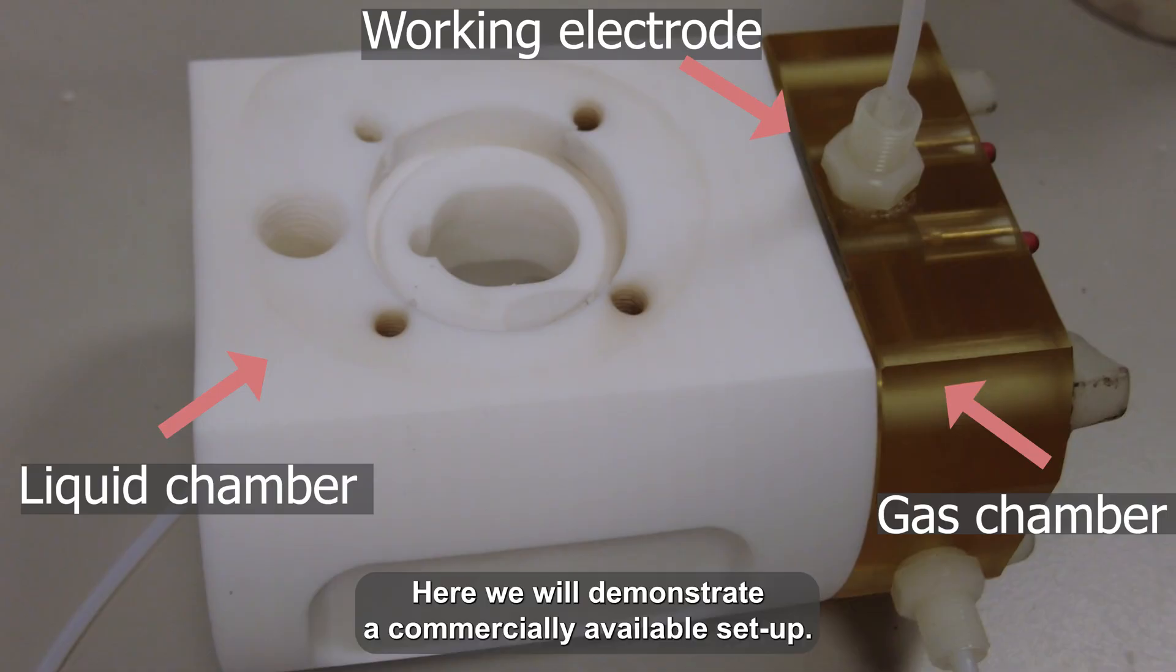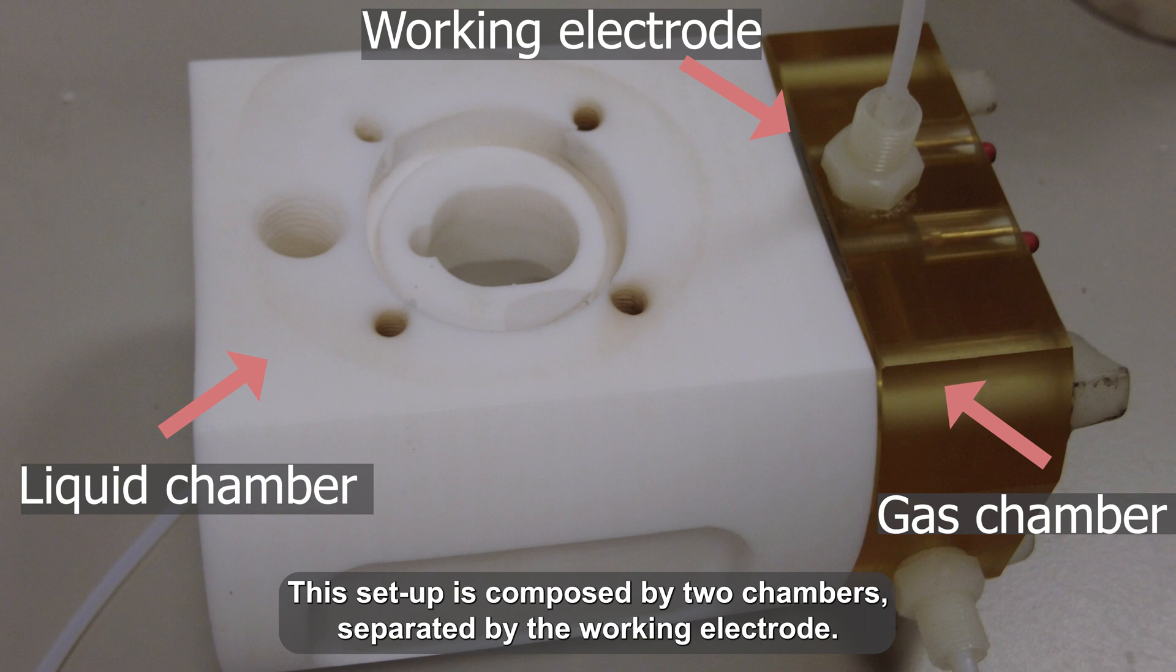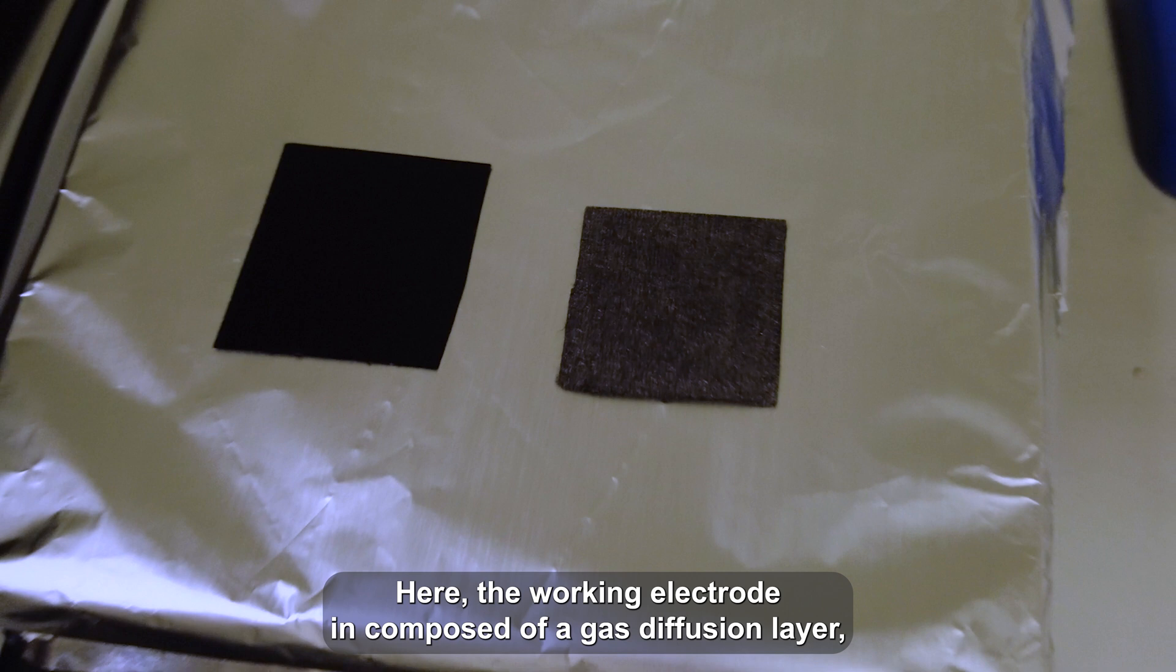Here we will demonstrate a commercially available setup. This setup is composed of two chambers separated by the working electrode. The working electrode is composed of a gas diffusion layer, generally carbon paper, where the catalyst is deposited.